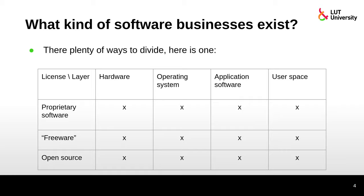We can divide software businesses and pieces of software into different categories. One way to divide it uses a y-axis for license and an x-axis for layer-based division. We have proprietary software where source code is not released and you pay for it, freeware where the source code is not released but use is free, and open source where source code is released and you don't pay anything.